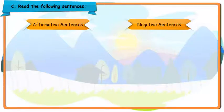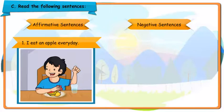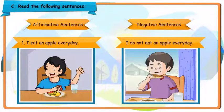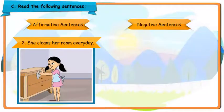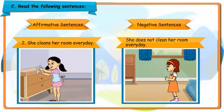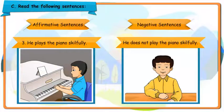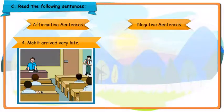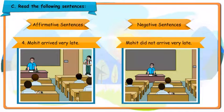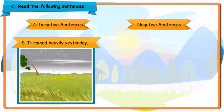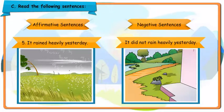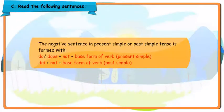Affirmative Sentences, Negative Sentences. I eat an apple every day. I do not eat an apple every day. She cleans her room every day. She does not clean her room every day. He plays the piano skillfully. He does not play the piano skillfully. Mohit arrived very late. Mohit did not arrive very late. It rained heavily yesterday. It did not rain heavily yesterday.